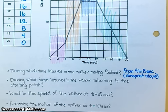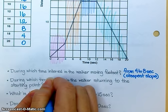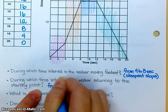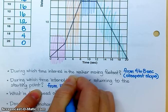During which time interval is the walker returning to the starting point? What time interval? I need a little length of time. From 12 to 20. How do you know that? Because the distance is going down. You're returning to the starting point. From 12 to 20.